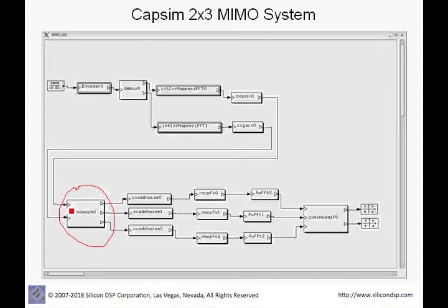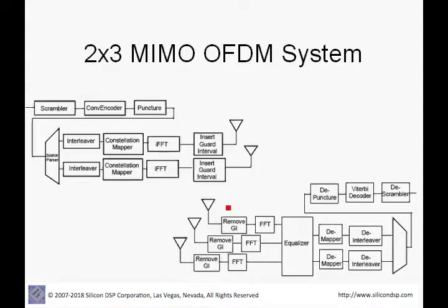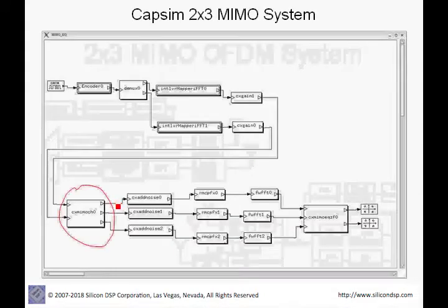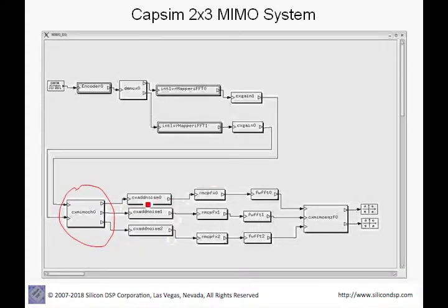This block models a 2x3 system — two transmit streams enter the MIMO channel block and three receive paths exit at the receiver. We have three receive chains, and in each chain we add individual noise, remove the cyclic prefix, perform a forward FFT, and then input these streams into the complex MIMO equalizer block, which implements a zero-forcing MIMO equalizer. The two spatial streams are then output through the individual outputs of the MIMO equalizer.